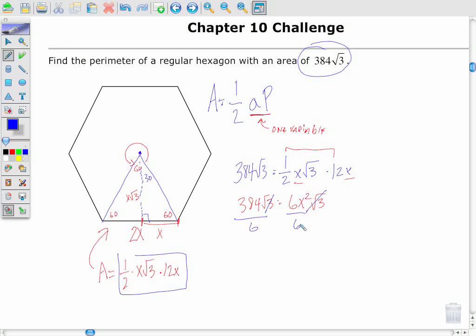And then further, I could divide both sides by 6. 384 divided by 6 is 64. So 64 is equal to x squared. I take the square root of both sides in order to find out what x equals.